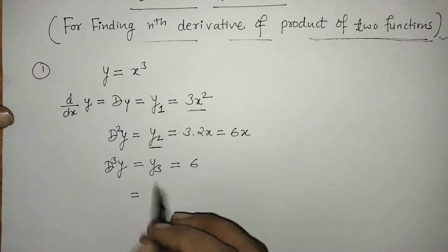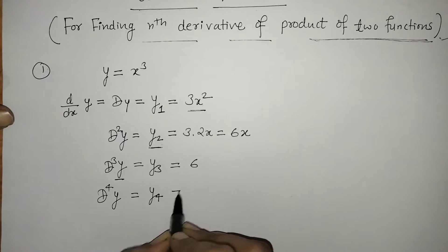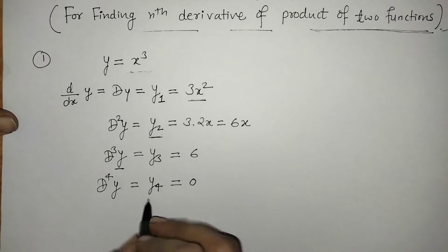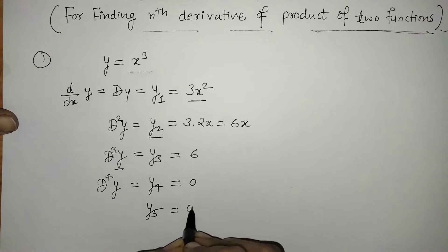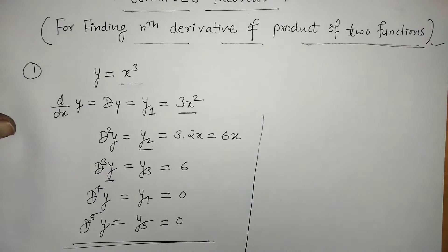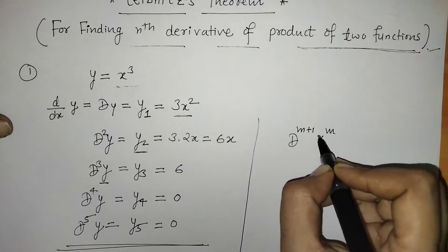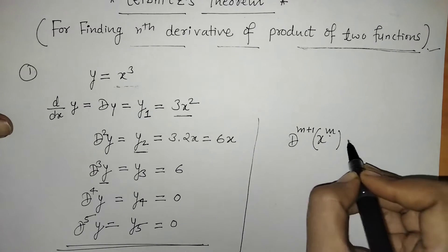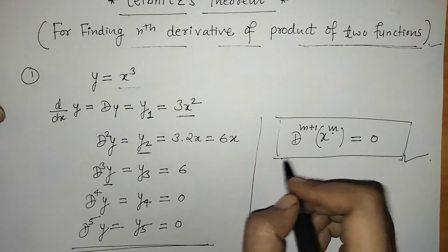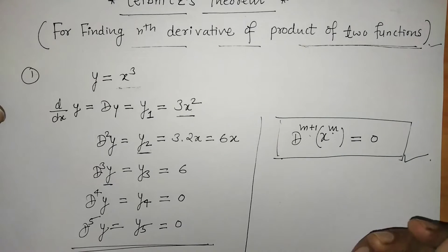If we differentiate y3 we get y4, meaning we are differentiating y four times, and the fourth derivative of x cubed is 0. Similarly, the fifth derivative is 0. So if we have x raised to a power and we take its derivative of order higher than that power, then the value is 0. We can say that if the order of derivative is greater than the power of x, then the derivative is 0.